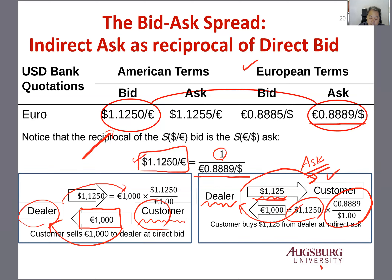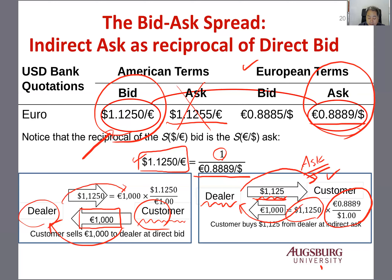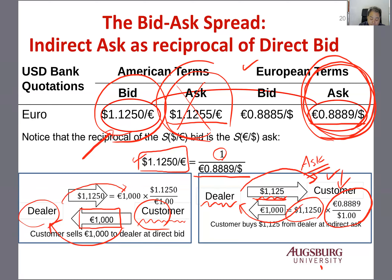If you only have the ask price, for the direct and indirect ask price, what happens is you can calculate the indirect ask price using the direct bid price. So the indirect ask price for dollars can be calculated as the reciprocal of the direct bid price. To summarize: indirect ask price equals 1 over direct bid price.